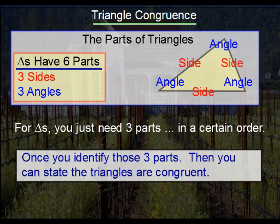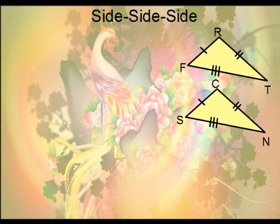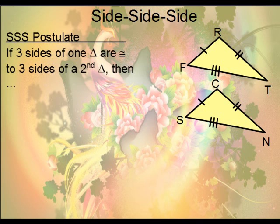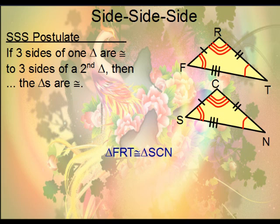Basically, you identify those three parts, and then you state that the triangles are congruent. Side-side-side simply means that if you have three sides of one triangle and they're congruent to three sides of a second, then the triangles are congruent.